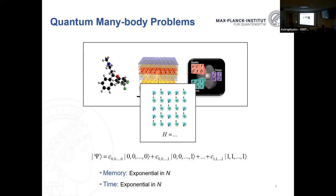You could trade time for memory. For example, if I have a memory in my quantum computer that is constant or only grows linearly with system size — which means it cannot be larger than the number of atoms in the universe — can I still run computations? Yes, but then you have to take more time. People have figured out that the computational time then grows even faster than exponential: it goes as 2 to the power of a function that depends on the circuit depth you want to simulate.